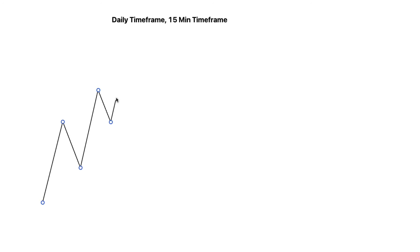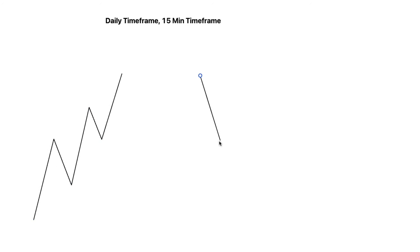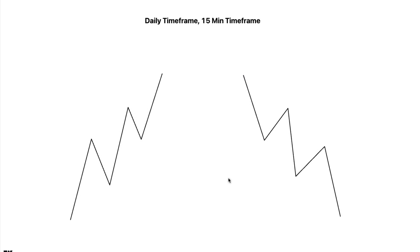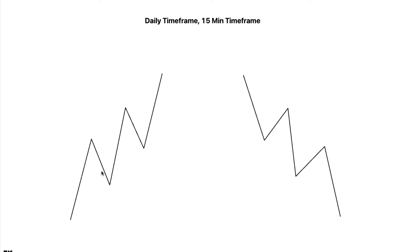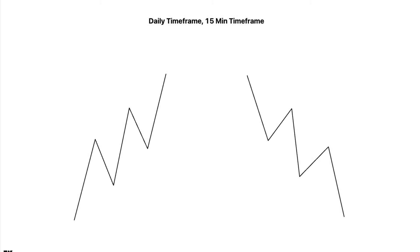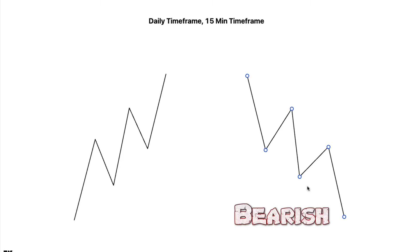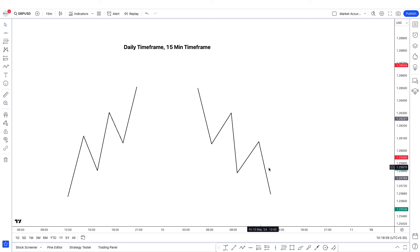So these are the rules. On the daily time frame, what you have to do is identify the order flow. Are we respecting the bullish PDAs? Are we respecting bearish PDAs? PDAs are premium and discount areas — it could be an order block, it could be a fair value gap. If the price is consistently respecting the bullish fair value gap or order blocks and it is going up, then the order flow is bullish, so we have to trade in that direction. Similarly, if the price is respecting the bearish PDAs — which would be the order block, fair value gap, volume imbalance — then the order flow is bearish and we have to trade in that direction.